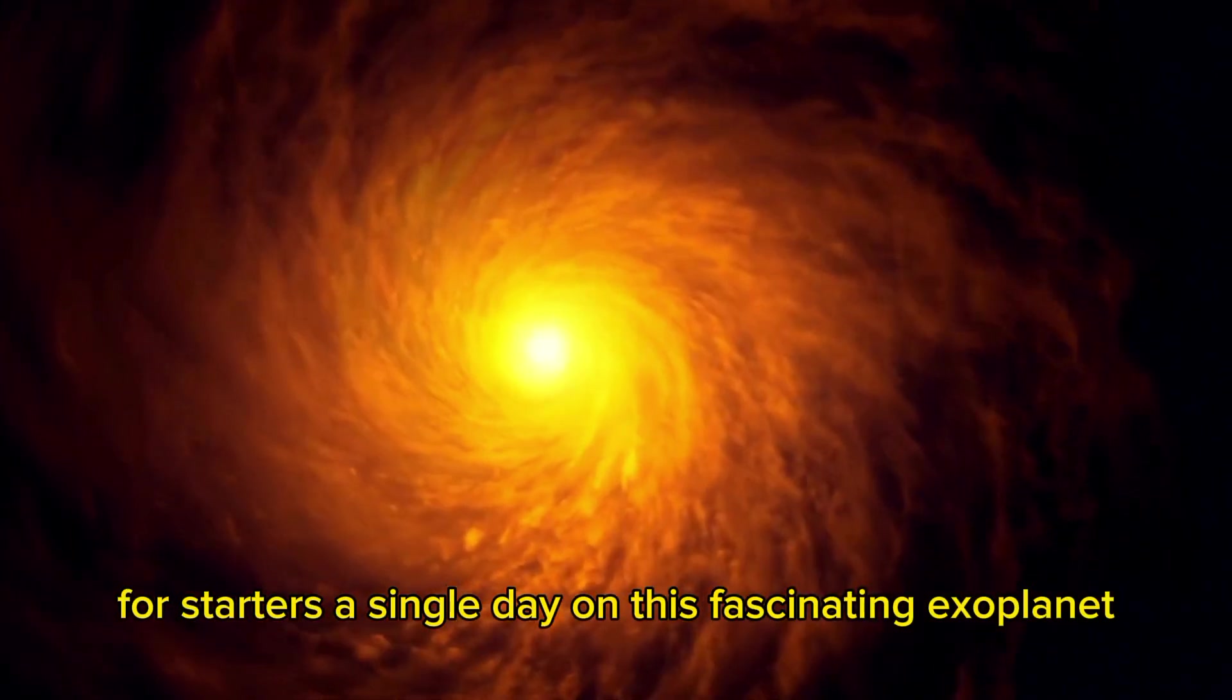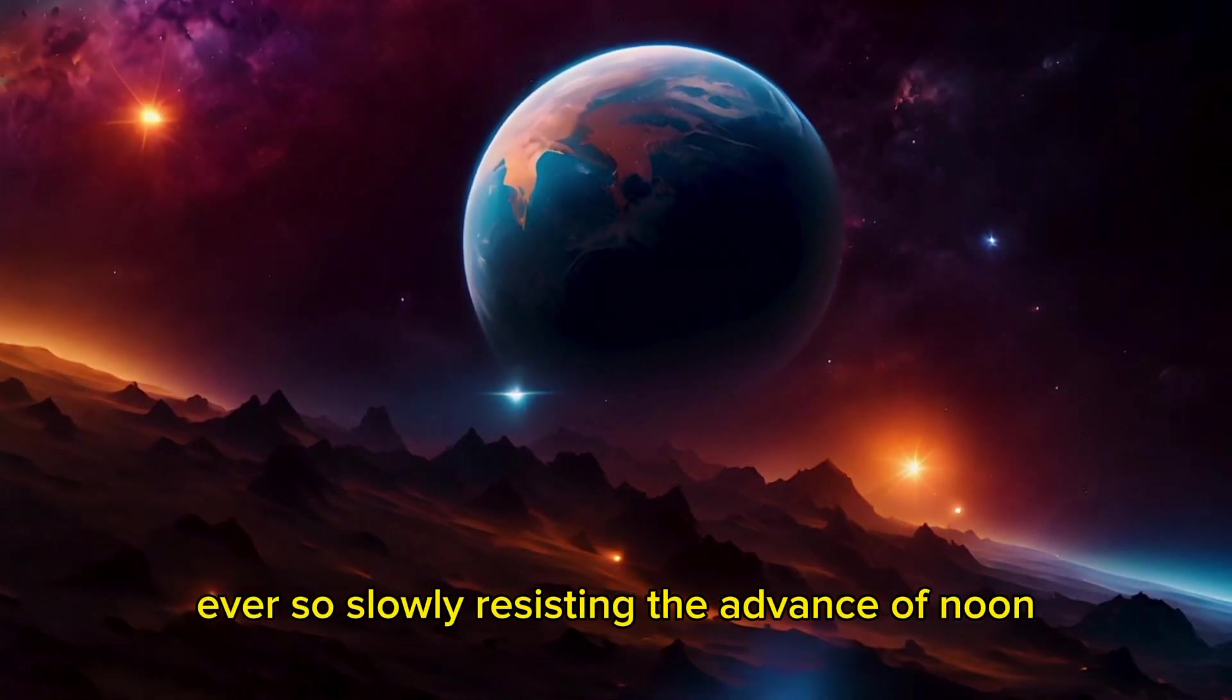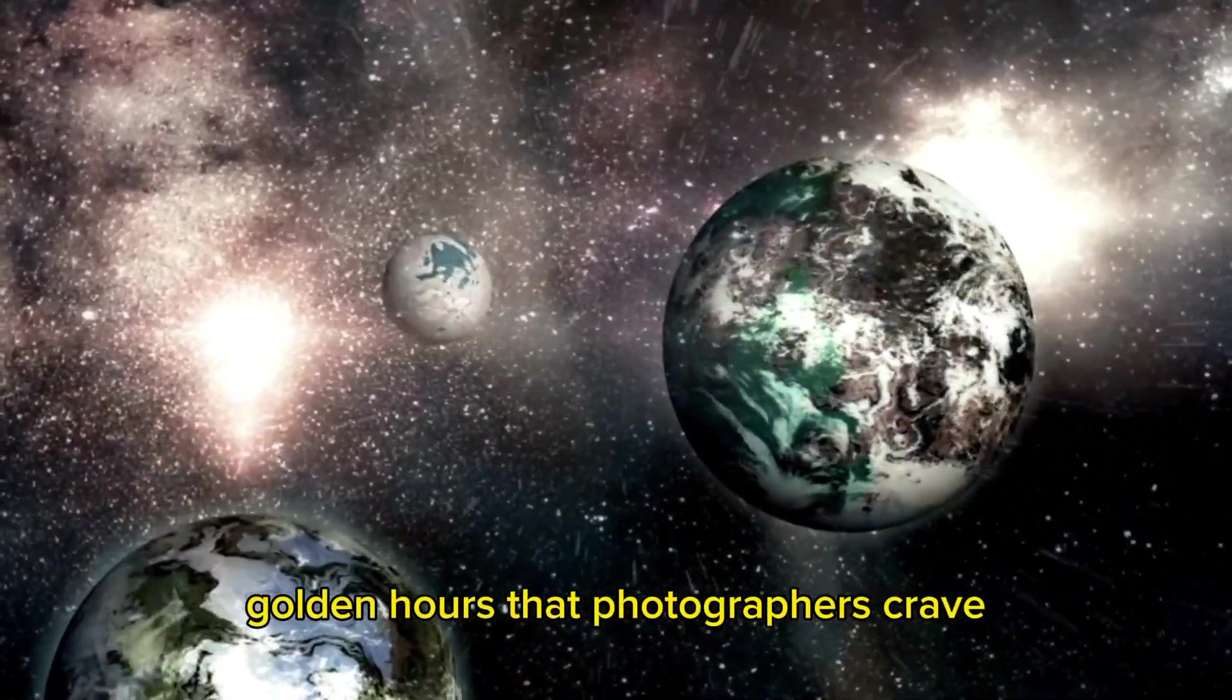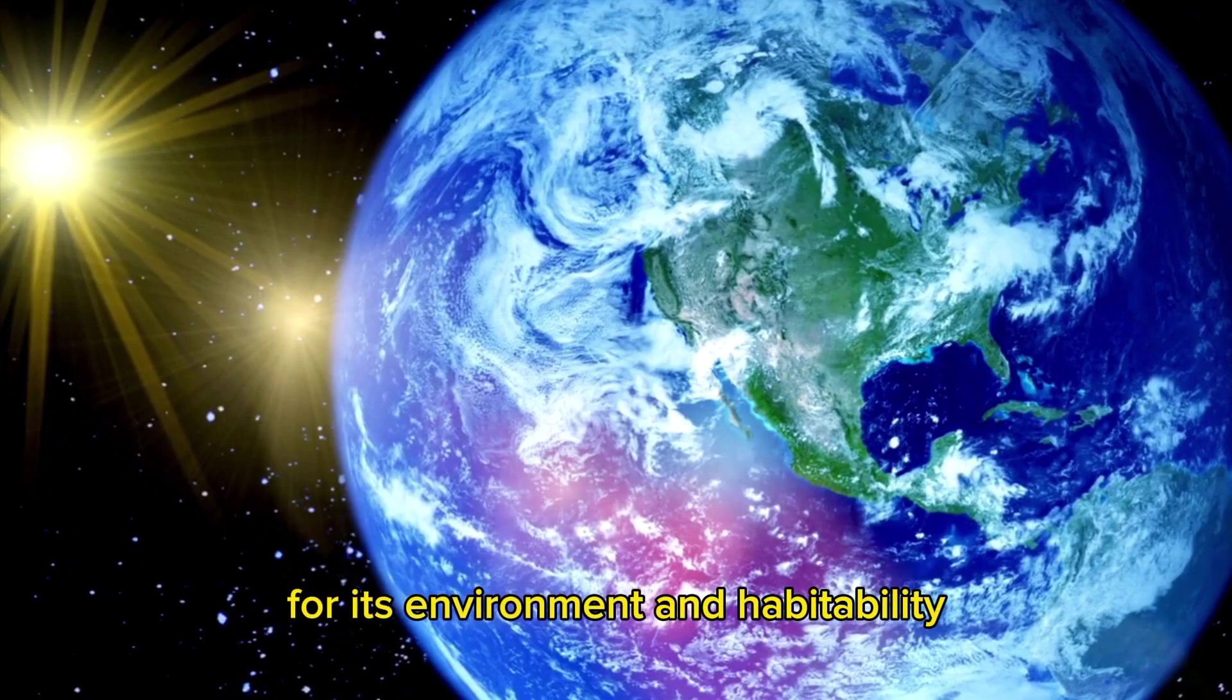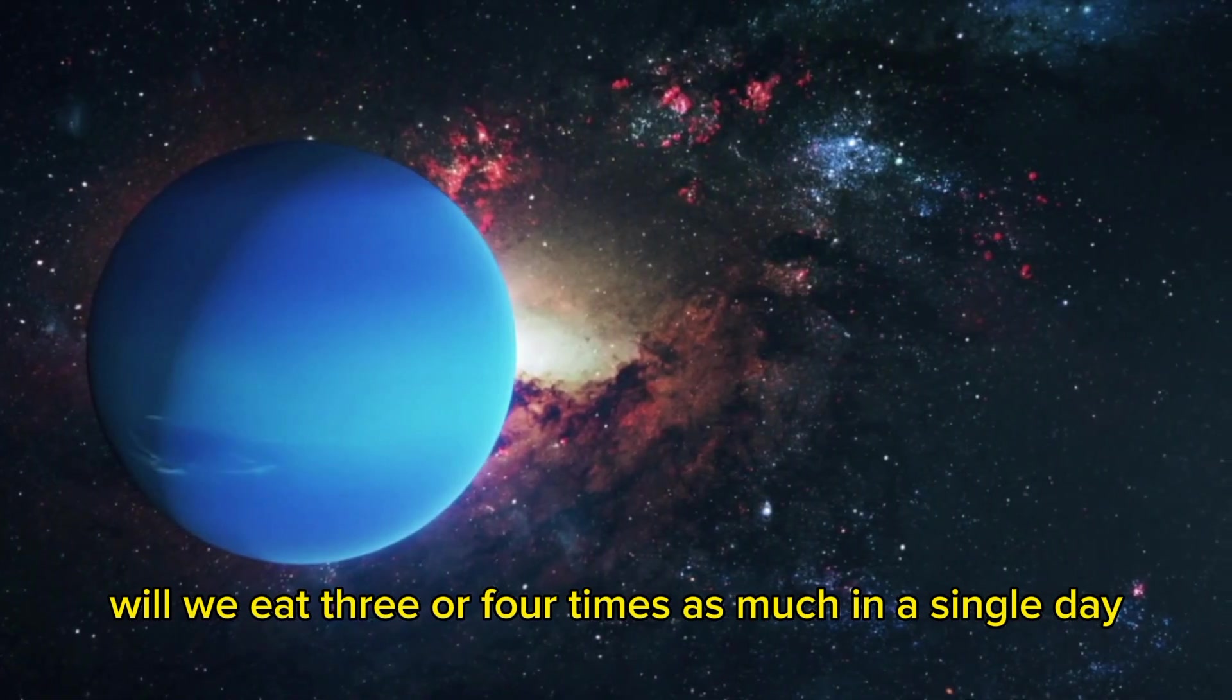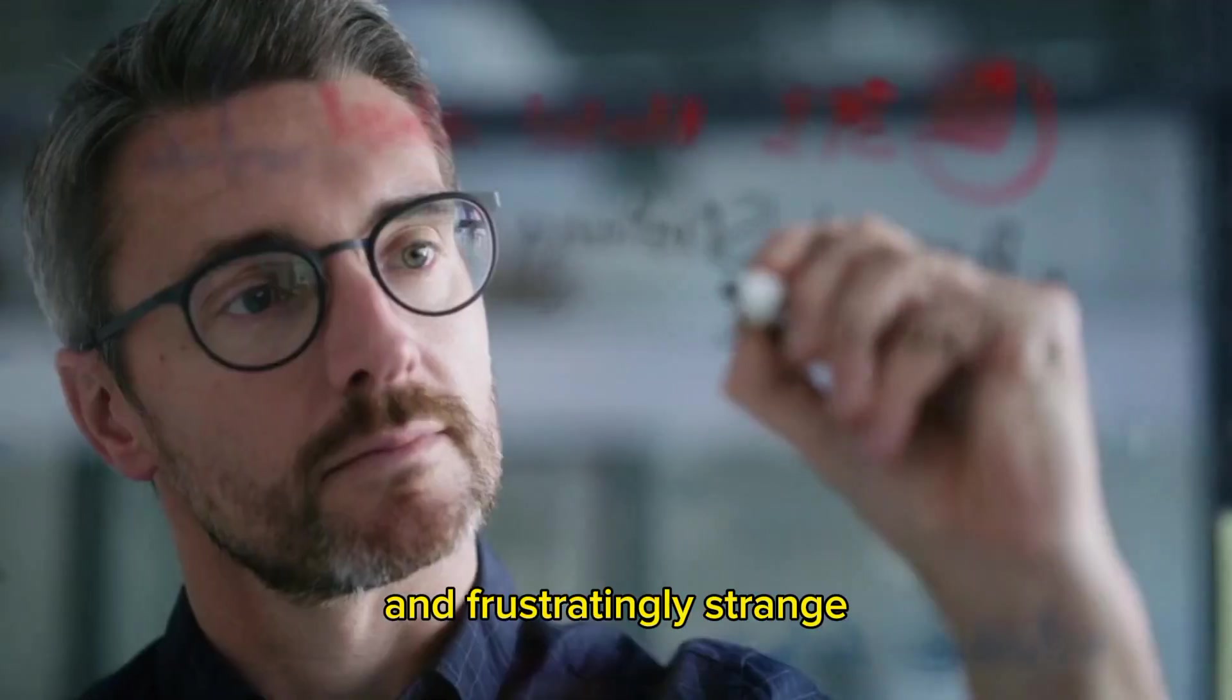But before we start fantasizing about vacations on Proxima b, let's consider a few of its unique features. For starters, a single day on this fascinating exoplanet lasts an astounding 11 Earth days. Imagine sunrises that usher in a new day ever so slowly, resisting the advance of noon, and sunsets that linger, creating dreamlike golden hours that photographers crave. While this sounds idyllic, it also has significant implications for its environment and habitability. How would human biological rhythms adapt to such prolonged cycles of light and dark? Will we eat three or four times as much in a single day? Will we sleep differently?